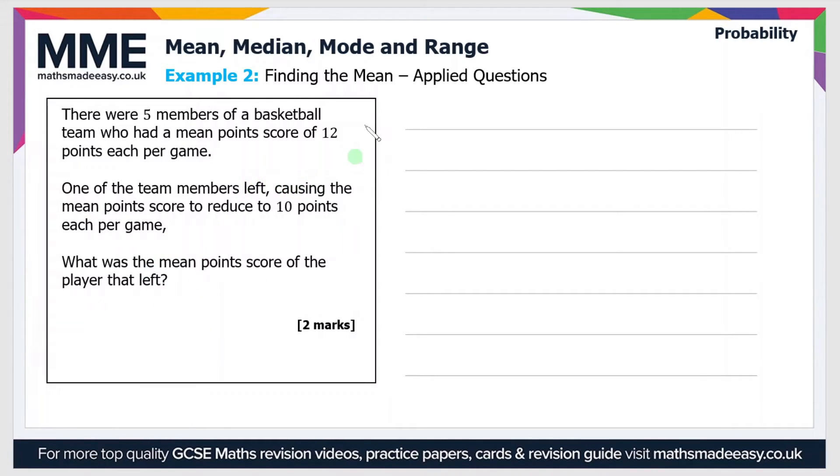Now to do this let's first of all work out the total number of points scored between the five members before the player left. So if they all had a point score of 12 per game then 5 times 12 is 60. So that gives us the total number of points scored by all five members.